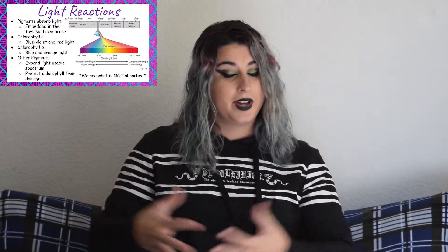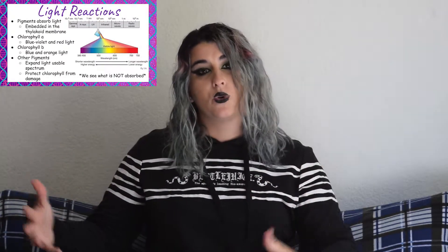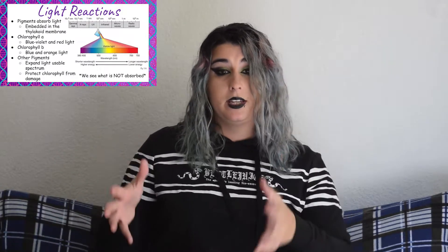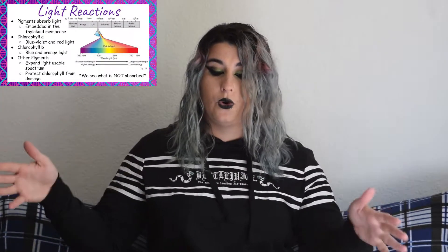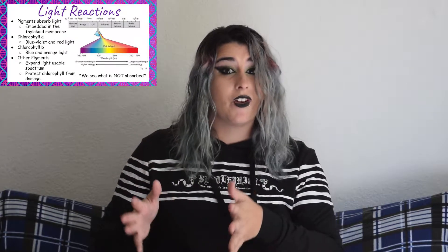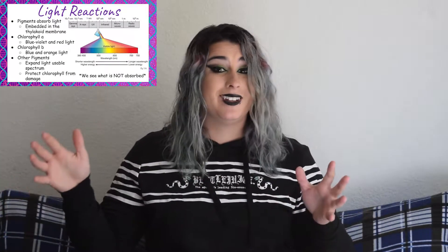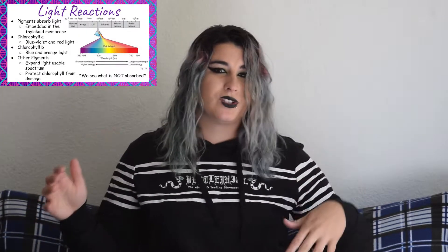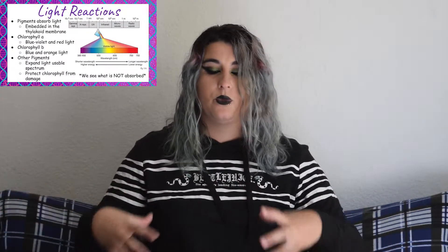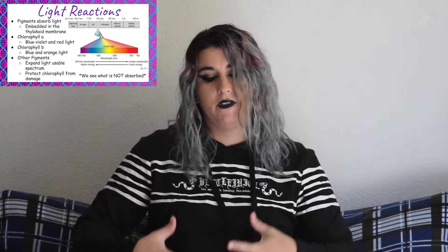Let's get into the light reactions. Light is an electromagnetic energy and it travels in waves. These waves are going to be measured in things known as wavelengths. This electromagnetic spectrum shows the full range of those electromagnetic wavelengths. Pulled out here we can see the very narrow range of visible light, which is going to be from about 380 nanometers to about 750 nanometers. We say about because those aren't necessarily hard cutoffs.